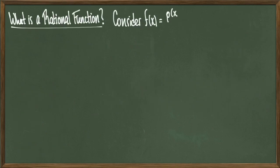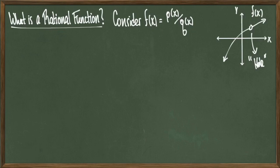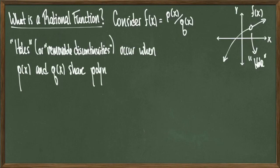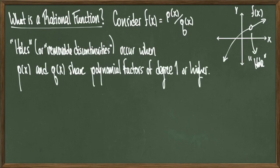That's it for asymptotes — now let's talk about the other phenomenon: holes in our graph. This is just a type of discontinuity that doesn't look like an asymptote. The line just continues as normal and basically skips a point, denoted by an open circle at that point. These holes, or as some textbooks call them, removable discontinuities, occur when p of x and q of x share polynomial factors of degree 1 or higher. This means that if I'm given a rational function and it simplifies, something more than just a number is canceling from the numerator and denominator — that something is a polynomial itself. If the polynomials that cancelled have a root, that root pinpoints where the holes will be present.